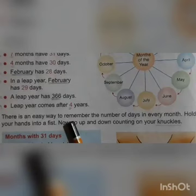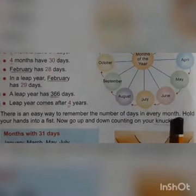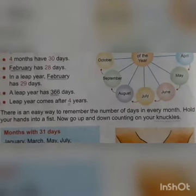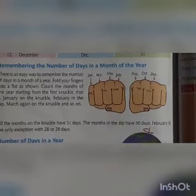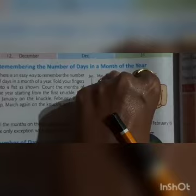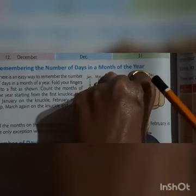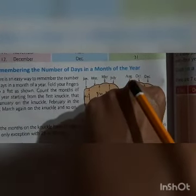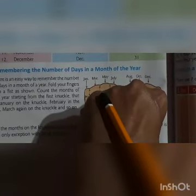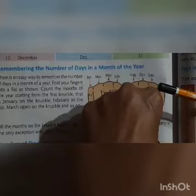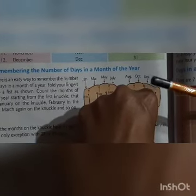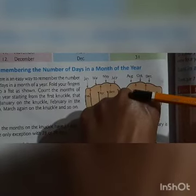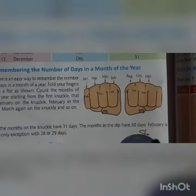There is an easy way to remember the number of days in every month — hold your hands into a fist. Now go up and down counting on your knuckles. The raised knuckle is the hillside and the gap between is the valley. When there is a hill, there are 31 days. When there is a valley, the days are 30. Like this way, you can find out the months.